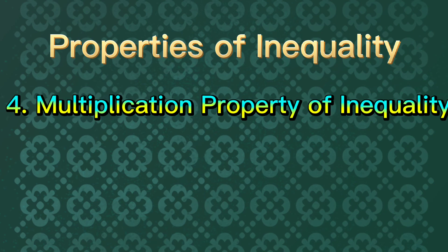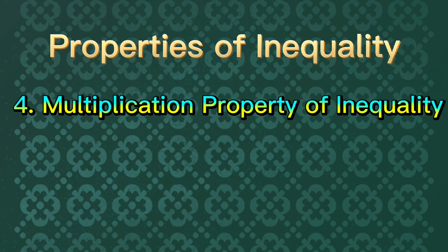The fourth property is called multiplication property of inequality, or MPI.